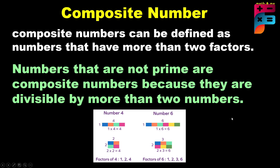For example, 4 and 6. We can divide 4 by 1, by 4, and by 2 — so it has more than two factors, making it composite. Similarly, 6 can be divided by 1, 2, 3, and 6. So the factors of 4 are 1, 2, 4, and the factors of 6 are 1, 2, 3, 6. These are composite numbers.